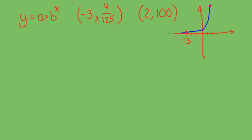But what we know about this exponential curve is it has this equation and it goes through these two points. So what we need to do is find out what a and b are and then we'll have this exponential function. We know that we're looking for an exponential function that goes through this point, so when y is 4/125 then x needs to be -3, so we get that equation.